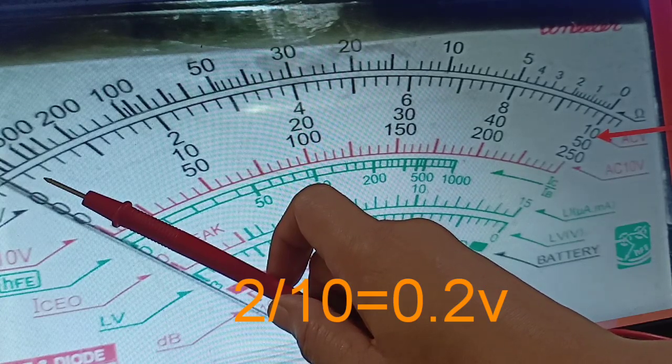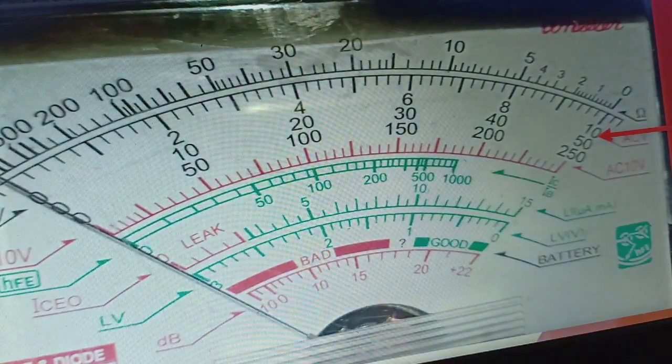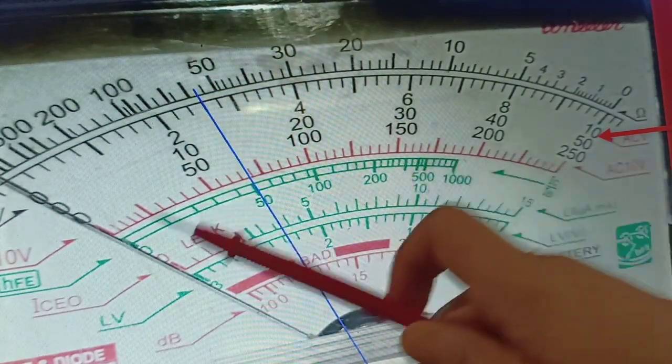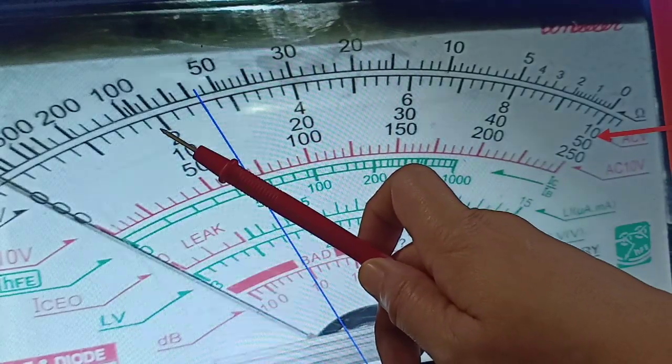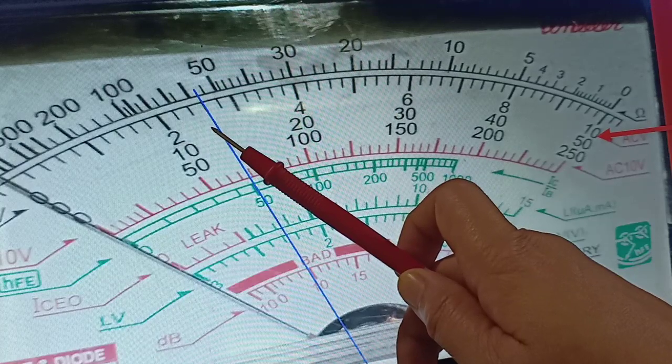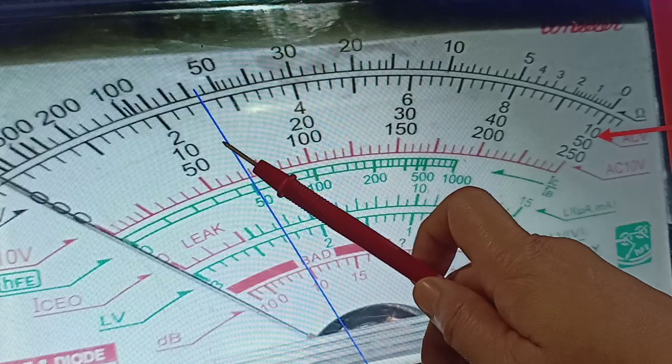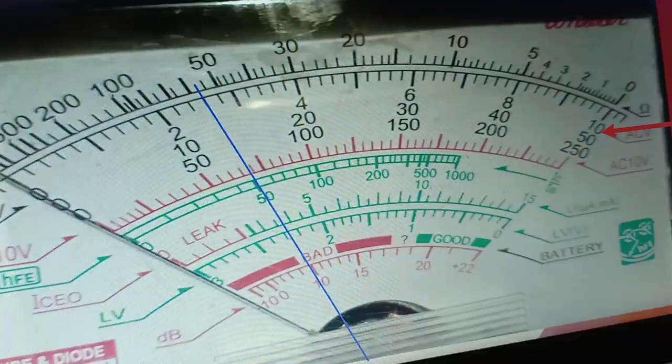If that is 0.2 volts, we can now read this setting as: this is 2, 2.2, 2.4, 2.6. So this is 2.6 volts. I hope that is clear with you.